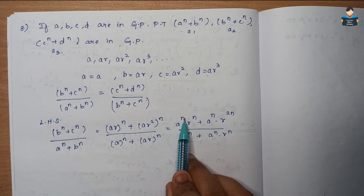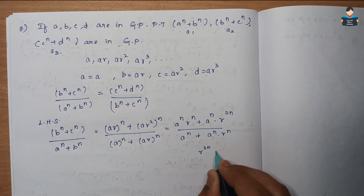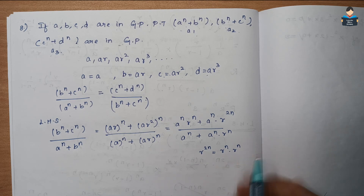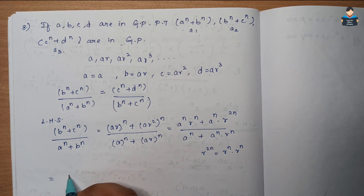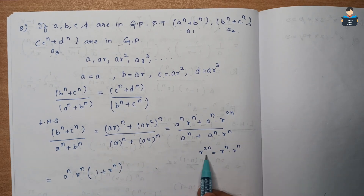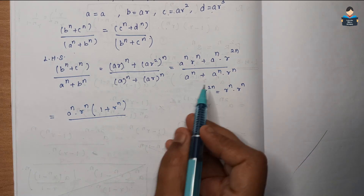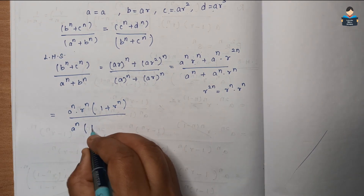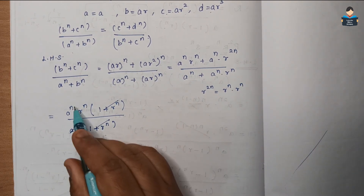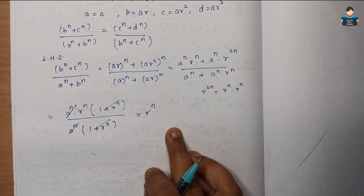In the numerator, A^n·r^n is common, giving A^n·r^n(1 + r^n). In the denominator, A^n is common, giving A^n(1 + r^n). The terms A^n and (1 + r^n) cancel, leaving the answer R^n. That is the LHS part.